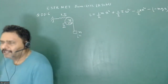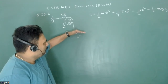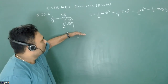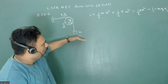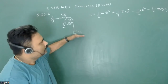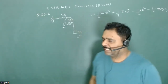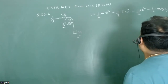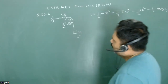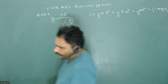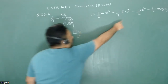We can take any reference level for the gravitational potential energy. I am taking this as my zero, so after moving distance x the potential energy is minus mg x. There is no harm in writing it this way.